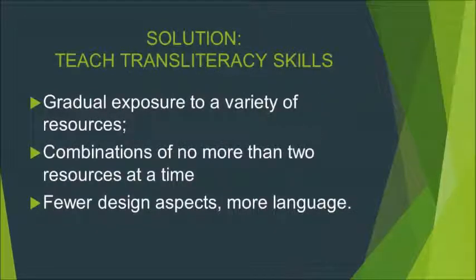The solution lies in understanding the fact that transliteracy skills have to be taught. The teacher cannot expect that learners, even the young generation, can start working with a variety of information sources automatically. First of all, students should be exposed to various means and resources gradually. Second, no more than two resources should be used at a time.